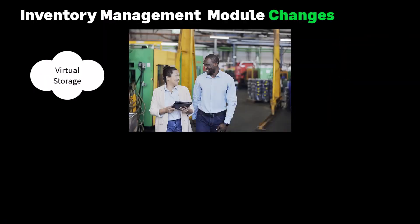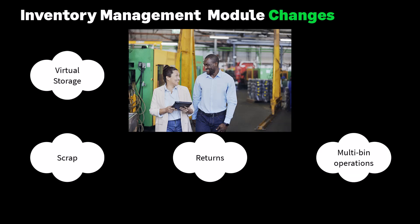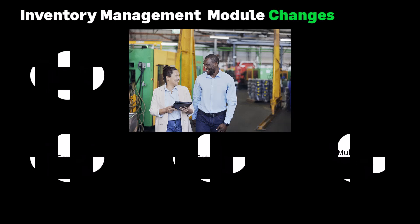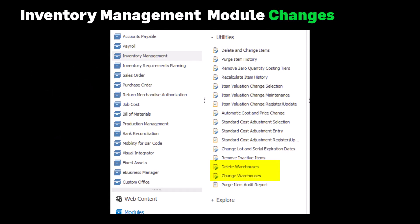Are you utilizing virtual storage spaces for handling scrap returns and multi-bin operations? Do you find you need to eliminate these warehouses when they become obsolete, or to modify or remove a warehouse when the physical location undergoes closure or relocation? Delete Warehouse and Change Warehouse utility tasks have been added to the Inventory Management Utilities menu to handle it. Deleting warehouses is necessary when virtual warehouses for scrap returns and multi-bin are no longer needed or when a physical warehouse location closes. Use Change Warehouses to re-number or merge existing warehouse codes. Both utilities feature the flexibility to access and enter information when data entry is in progress or Item Maintenance is in use. File checking occurs upon clicking the Proceed button. Please refer to Help for the details on how to carry out a change or delete.